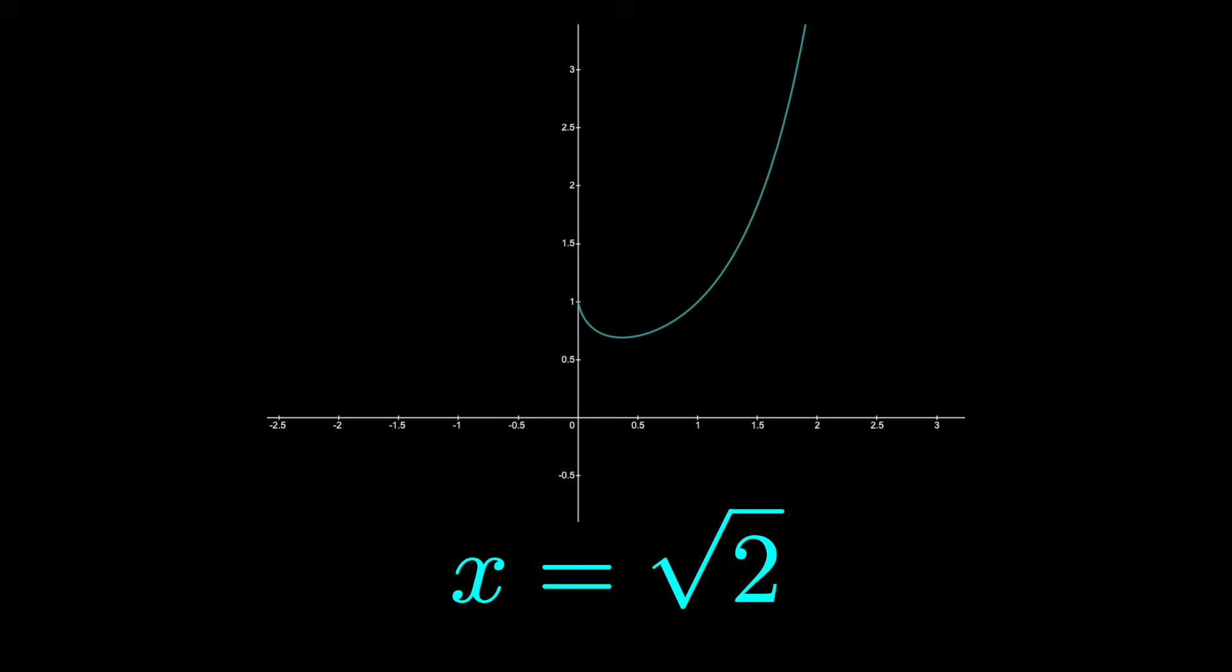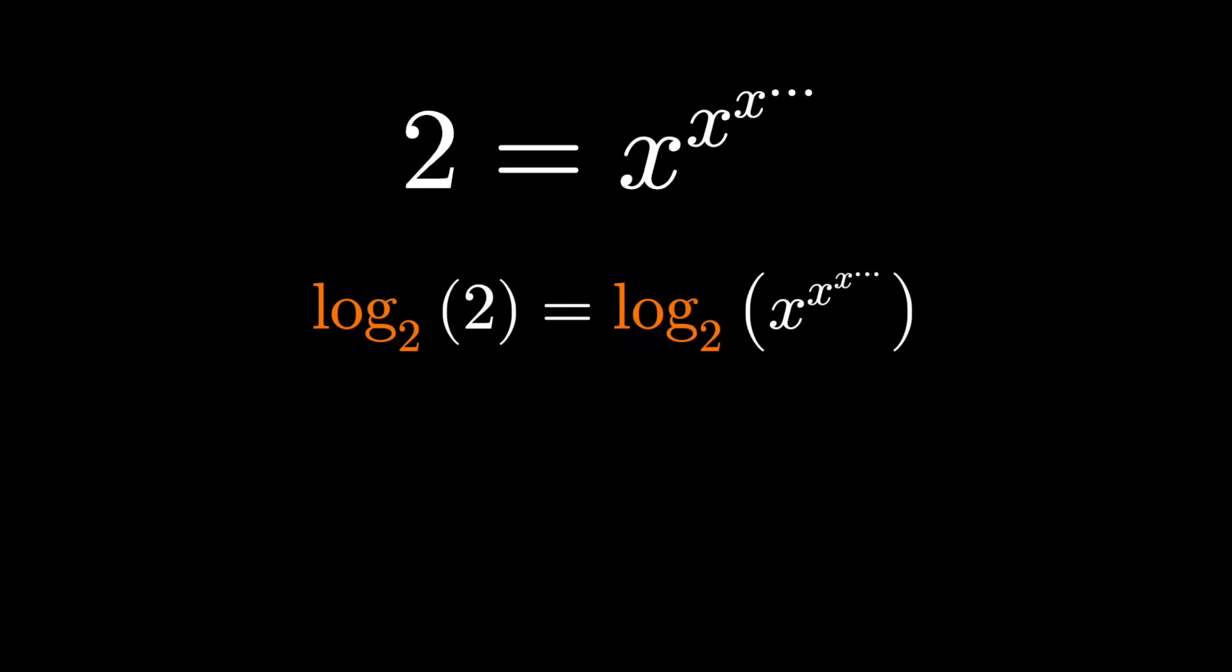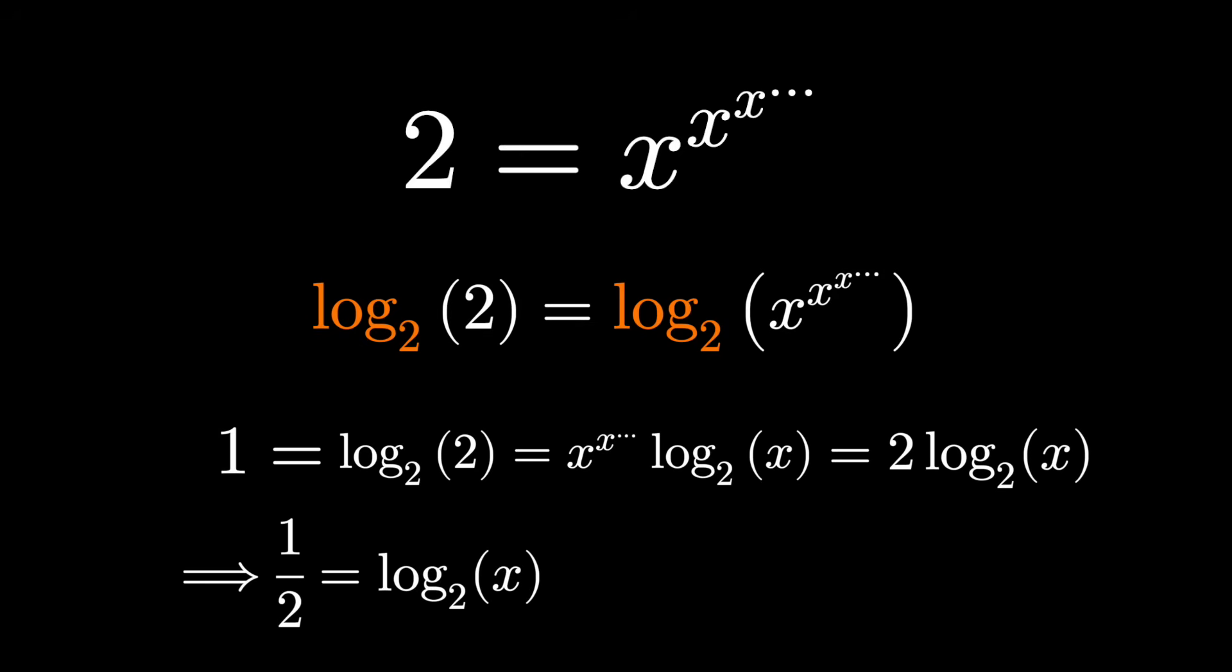That solution would also violate our logarithm properties. If we take the log base 2 of both sides of this equation, using our properties of logarithms to drop down that exponent, again x to the x on forever is 2, the solutions to this logarithmic equation are square root of 2, but not negative square root of 2 since logarithms are not defined for negative values of x, at least over the real numbers.